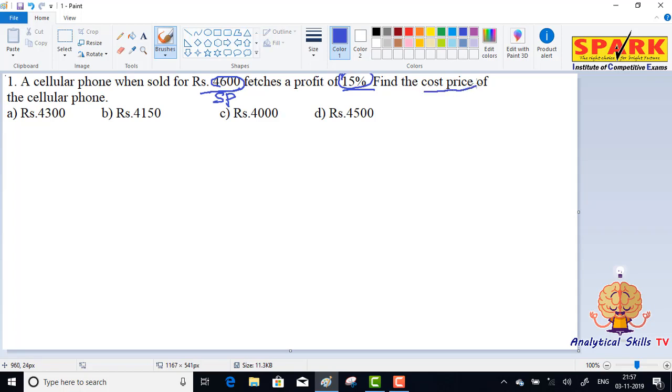Okay, we need to find the cost price. So we use the universal formula: initial value times change equals resultant value. Initial value in business is the cost price, change is the percentage increase or decrease, and final value is the selling price. So cost price into 100 plus profit percent by 100 equals selling price.